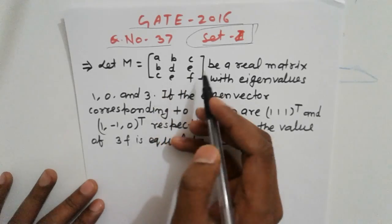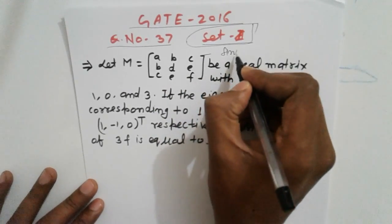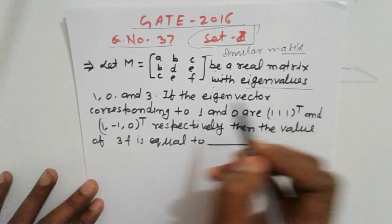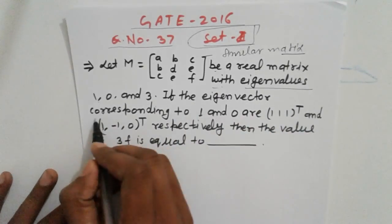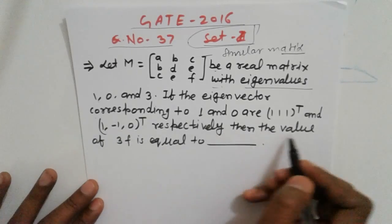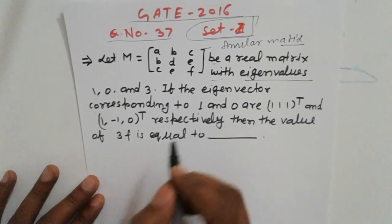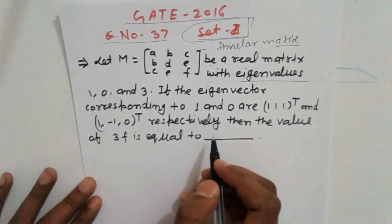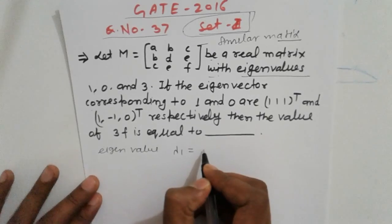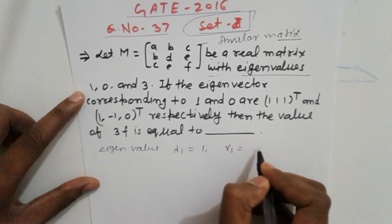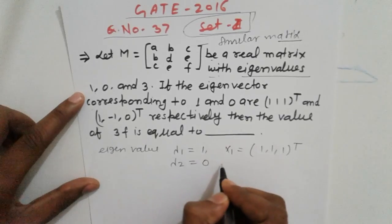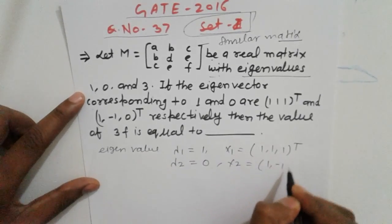So the matrix here, suppose it is given a b c b d e f — something is given. It is clear which is a similar symmetric matrix. Next, let A be a real matrix with eigenvalues 1, 0, 3. If eigenvectors corresponding to eigenvalues 1 and 0 are [1,1,1]^T and [1,-1,0] respectively, then what is the value of f?